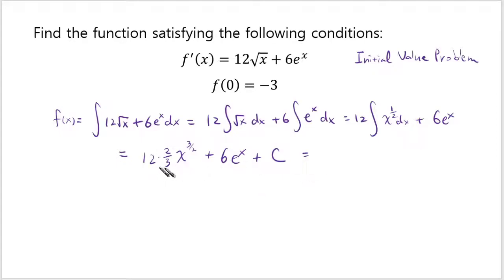12 divided by 3 is 4. 4 times 2 is 8. So you end up with 8 times x to the 3 over 2 plus 6 times e to the x plus c.